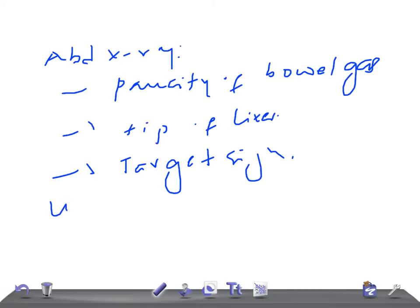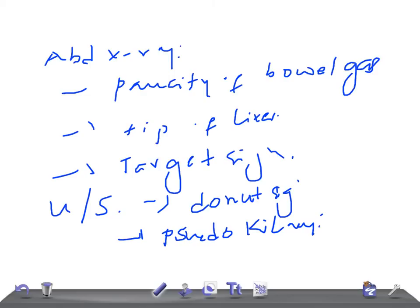Let's talk about ultrasound of abdomen. It's the test of choice, remember. You can see the donut sign: single hypoechoic ring with hyperechoic center, just like the target sign we discussed in x-ray. There can be a pseudokidney sign, as if it looks like a kidney but it's not a kidney. It's superimposed hypoechoic and hyperechoic layers because of edematous walls of bowel and area of compressed mucosa.